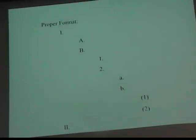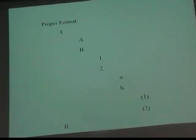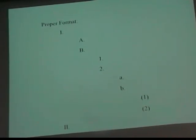Just so you know the proper format: main points are Roman numerals. The second level points are capital letters, then Arabic numbers — regular numbers. If you subdivide the capital letter, it goes to regular numbers. If you go any farther than that, you've done way too much for your outline. I don't want to read the entire speech as an outline — I'm just showing you these so you know why you don't put parentheses on something later.